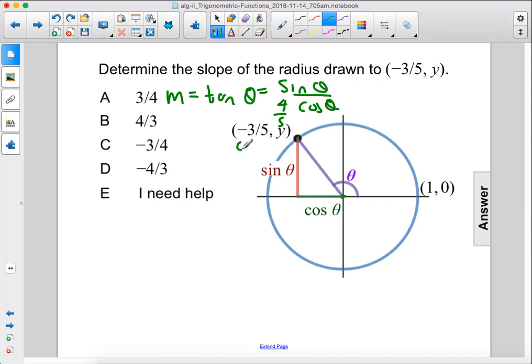This value here is cosine theta. This value here is sine theta. So sine theta over cosine theta would be 4 over 5 over negative 3 over 5.